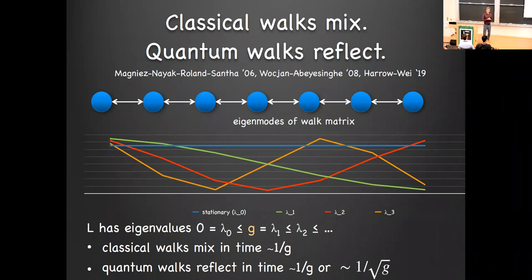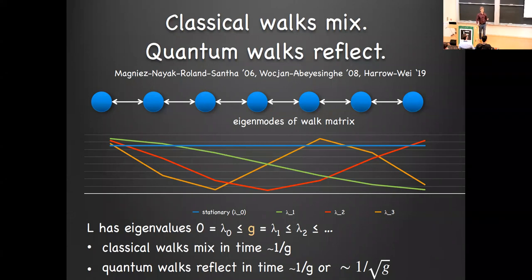The quantum analogue: nothing is decaying, everything is unitary. Things are picking up phase at different rates. The zero eigenvector is stationary; all other eigenvectors just oscillate at different rates. If you want to reflect about the stationary vector — as in Grover's algorithm — you want that one to have phase minus one and everything else phase one. The hardest phases to distinguish are the stationary state and the eigenvector just above it, so it takes time 1/g for these to become out of phase by a factor of pi.